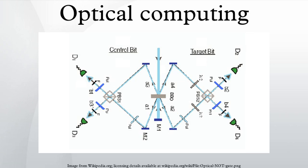However, optoelectronic devices lose 30% of their energy converting electronic energy into photons and back. This conversion also slows the transmission of messages. All optical computers eliminate the need for optical-electrical-optical conversions.